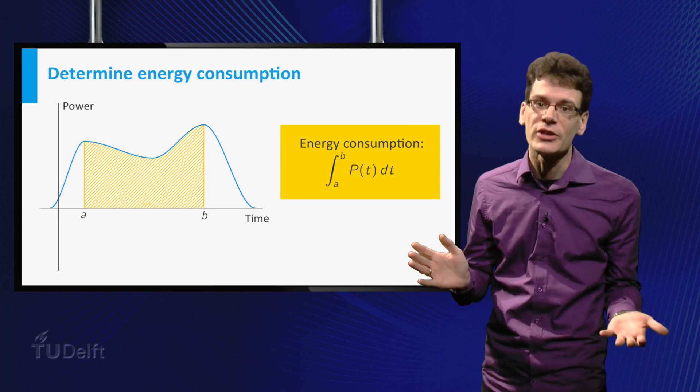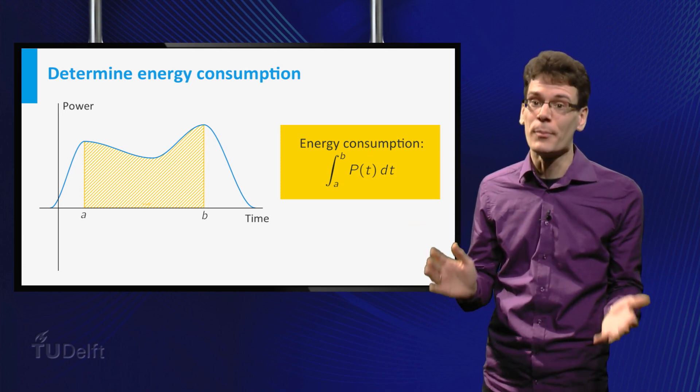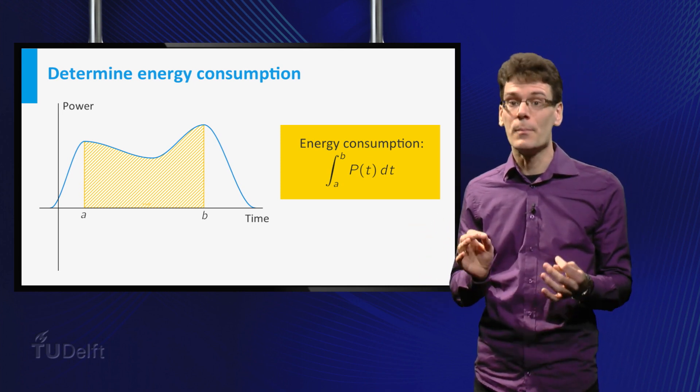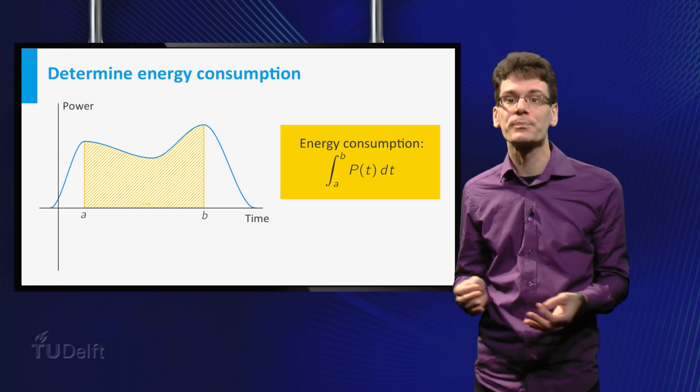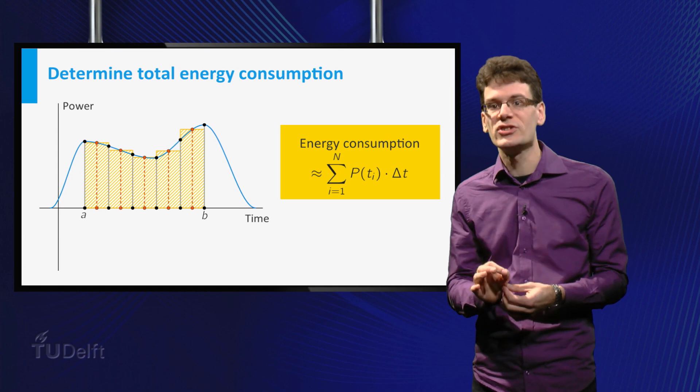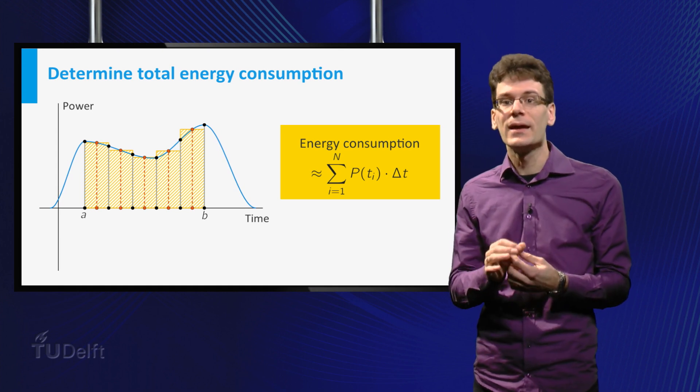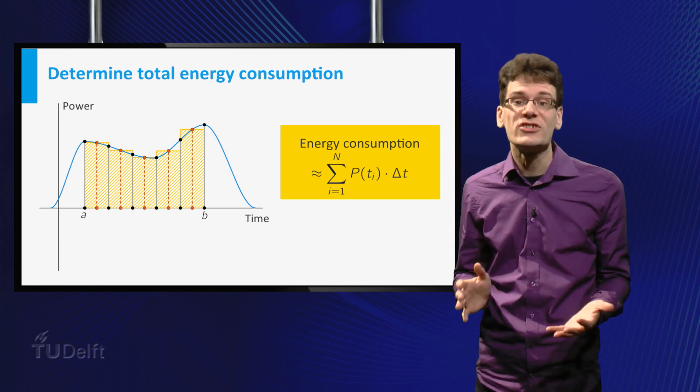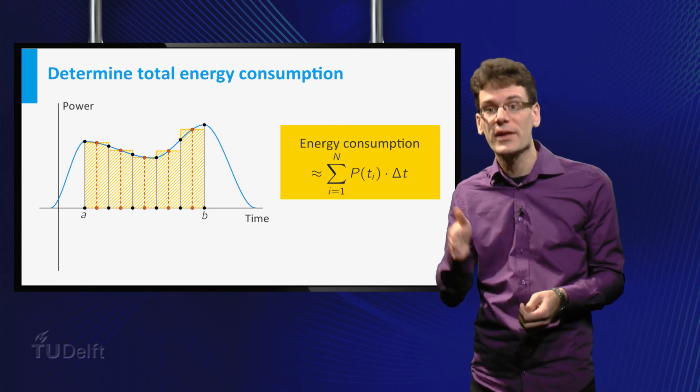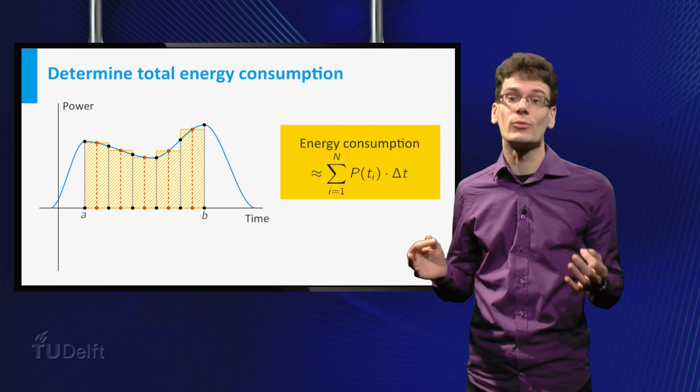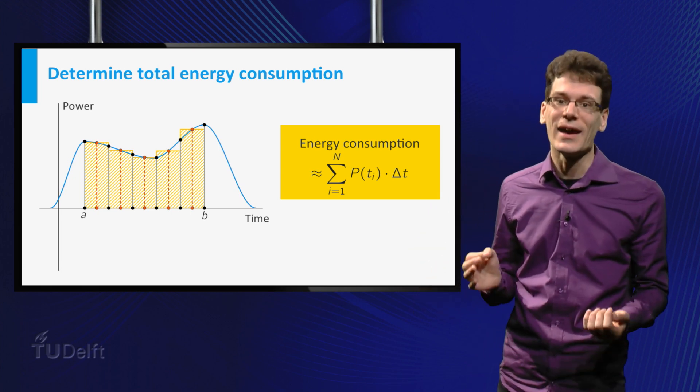I have to be honest here: in practice it is often impossible to evaluate such an integral exactly, but in many cases it suffices to have an approximation. To make such an approximation you can use a Riemann sum. In fact, this is roughly what a digital electricity meter does. It measures the power at sample points in time, and then calculates a Riemann sum to approximate the total energy consumption.